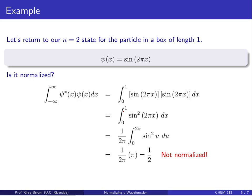Let's return to the n=2 state for the particle in a box of length L that we looked at a couple slides ago. The unnormalized wave function has this form: ψ(x) = sin(2πx).